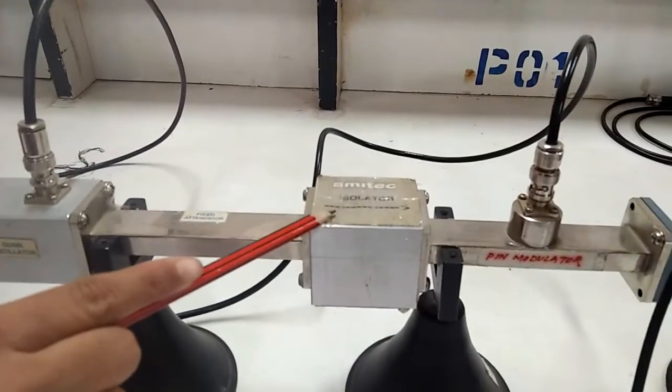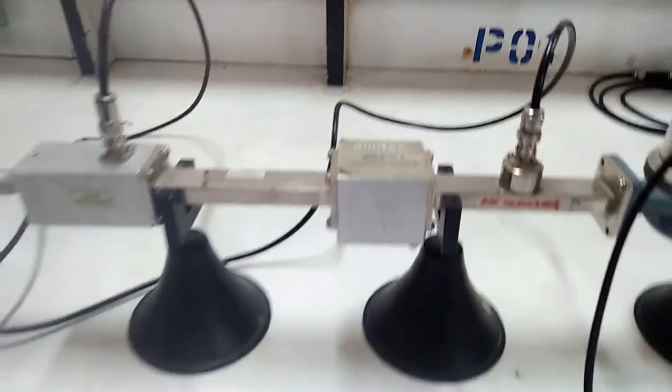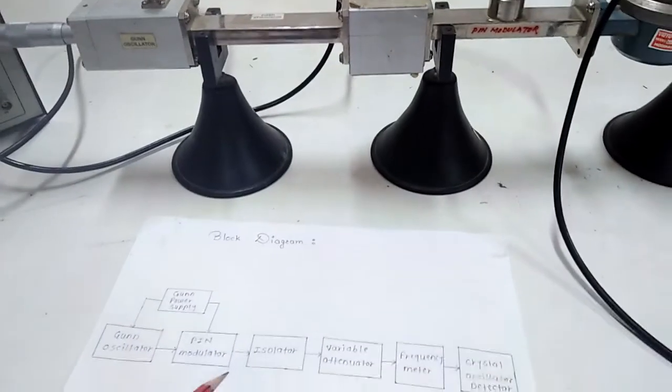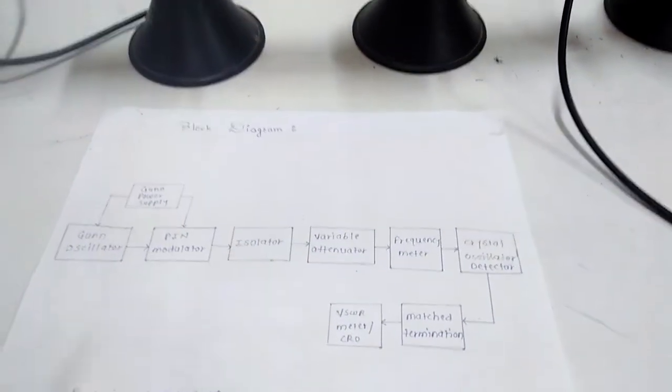Isolator is used for elimination of standing wave and propagation of wave in forward direction. Variable attenuator is used to provide attenuation of signal.